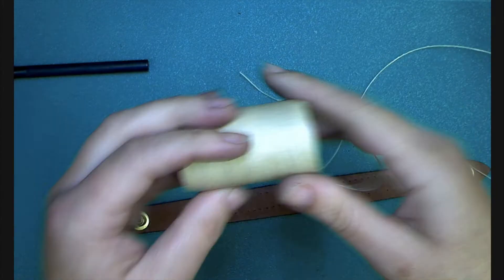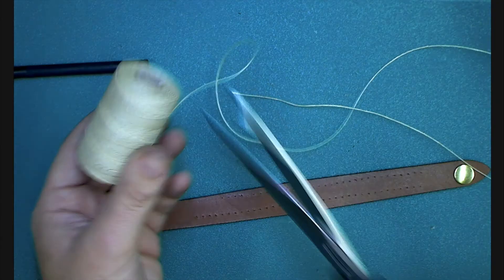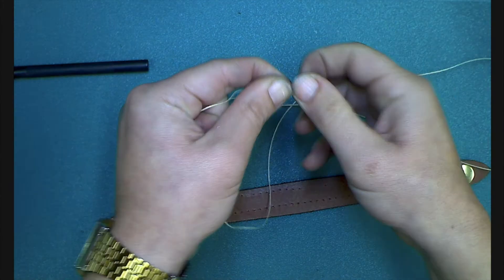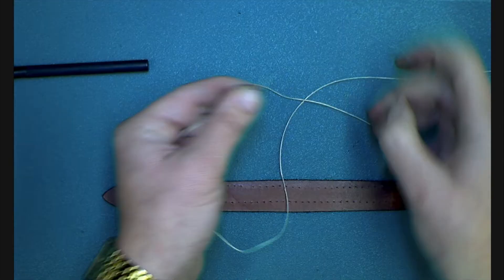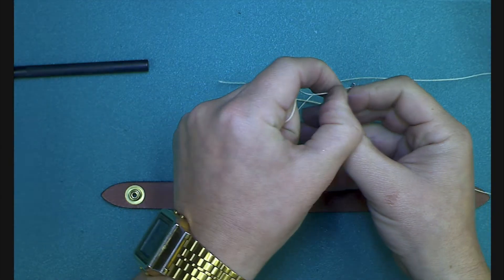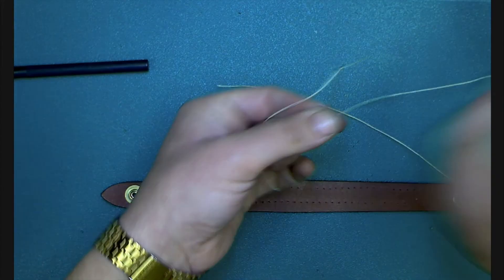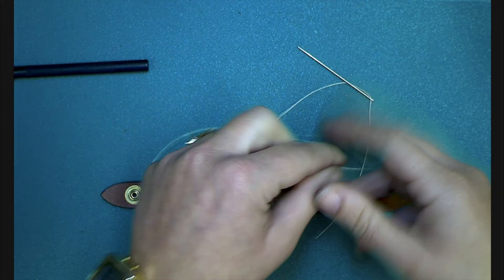I'm going to use a contrast color of the wax coated thread. Cut your thread about arm's length, no longer, otherwise it will get tangled up. One end thread through the needle, and on the other end tie a double knot.